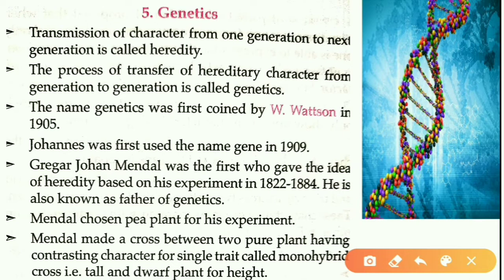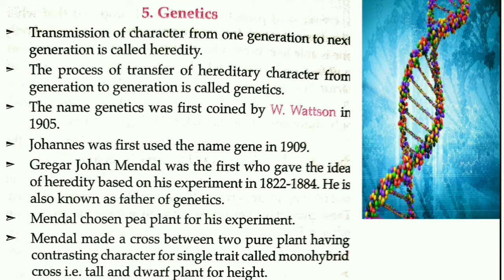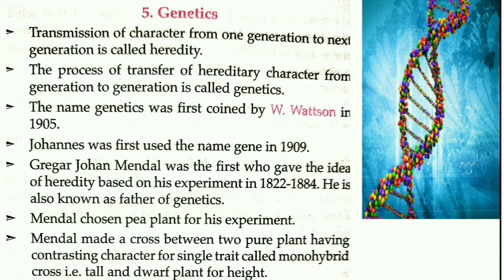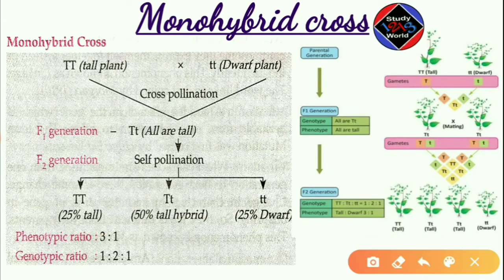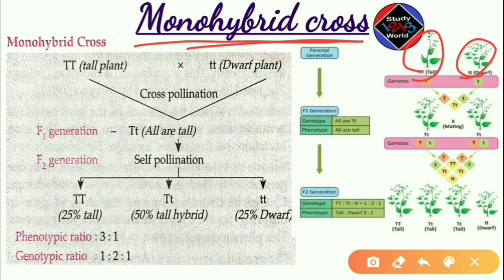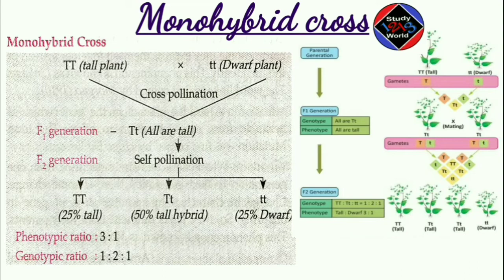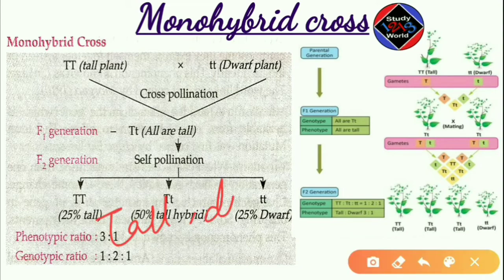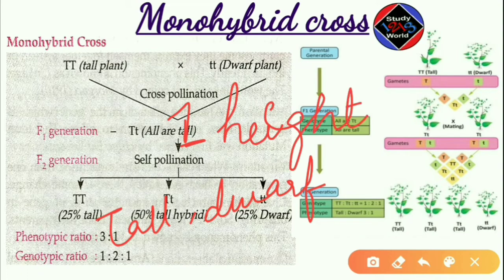Gregor Johan Mendel conducted several experiments on the pea plant. He made a cross between two pure plants having contrasting characters for a single trait, called monohybrid cross. He selected two plants — one is tall and the other is dwarf — which are contrasting characters for one trait, that is height.